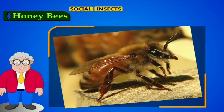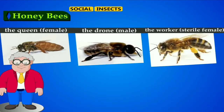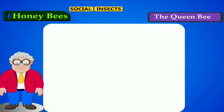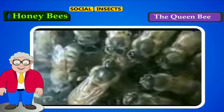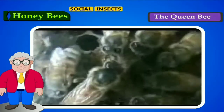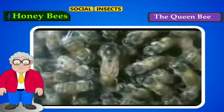Honey bees are also social insects that can survive only as a member of a community known as a colony. They live in beehives. The honey bee community consists of three structurally different types: the queen (female), the drone (male), and the worker (sterile female). Each type of honey bee has different functions in the colony.